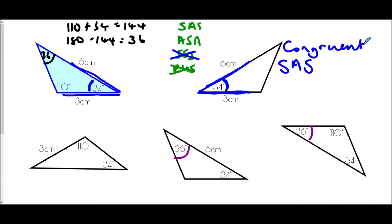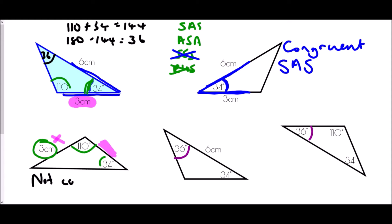The next triangle has a three-centimeter side, a 110-degree angle, and a 34-degree angle. Looking at the blue triangle, we do have a 110-degree and a 34-degree angle, and a three-centimeter side. However, the three-centimeter side in the blue triangle is between the 110-degree and 34-degree angles. In this comparison triangle, the three-centimeter side is not in the same position — so we cannot prove congruence. This triangle is not congruent.